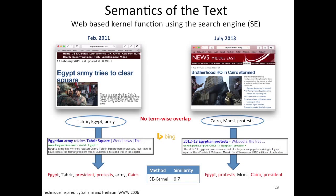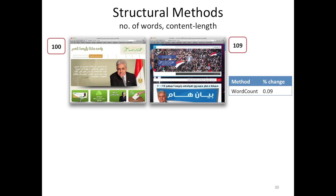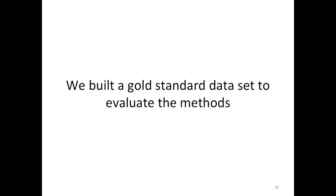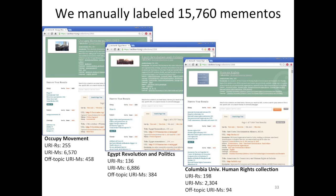We also looked at a semantic approach: if one page has Tahrir, Egypt, and army, and another has Cairo, Morsi, and protest, a human would realize they're on the same topic. We submitted these terms to the Bing search engine API, grabbed the resulting snippets, tokenized those, and re-ran a similarity measure. This gave us 0.7 similarity between those two pages. We built a gold standard dataset to evaluate these six methods, picking three archived collections: Occupy, Egyptian Revolution and Politics, and the Columbia University Human Rights Collection. We sampled seed URIs and mementos from these large collections and still ended up with 15,000 mementos that Yasmeen manually labeled.